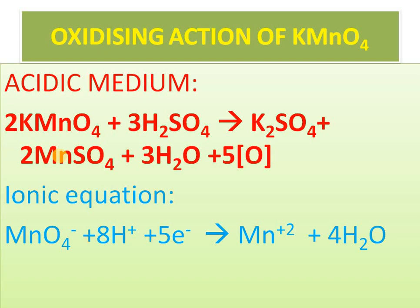I have told you two methods. Firstly, KMnO4 gives nascent oxygen in the presence of acidic medium, which is why it is an oxidizing agent. Secondly, the oxidation number of manganese decreases — reduction takes place — and therefore it acts as an oxidizing agent.